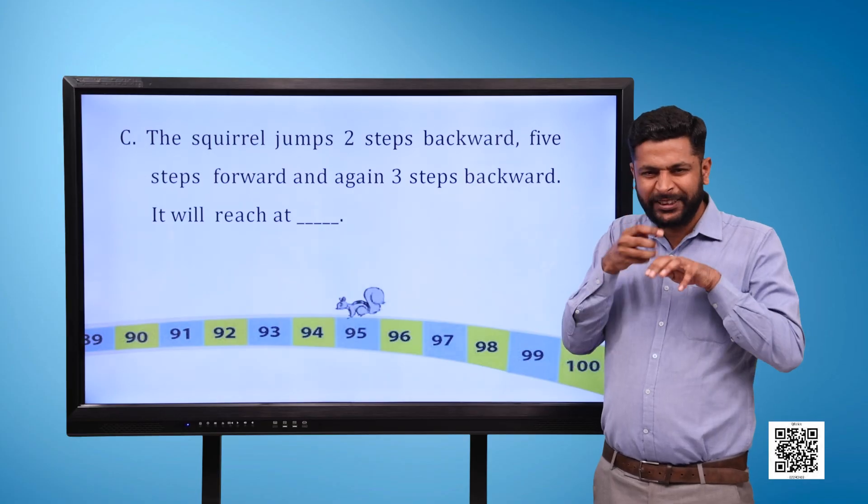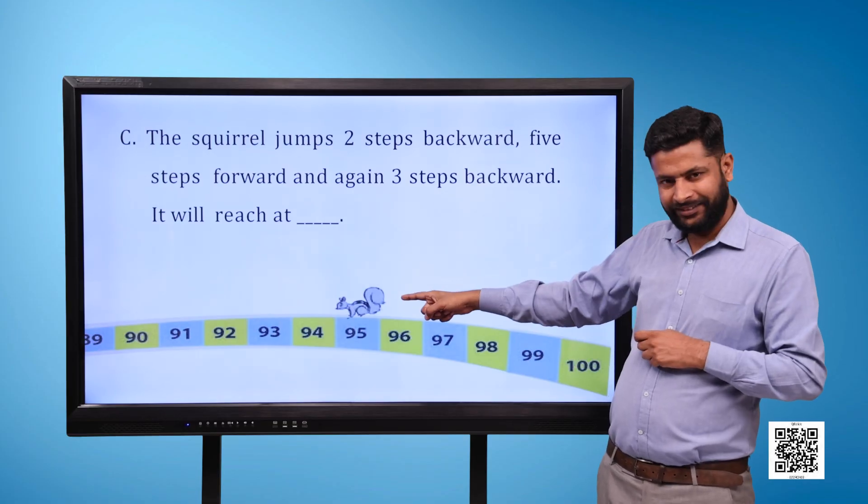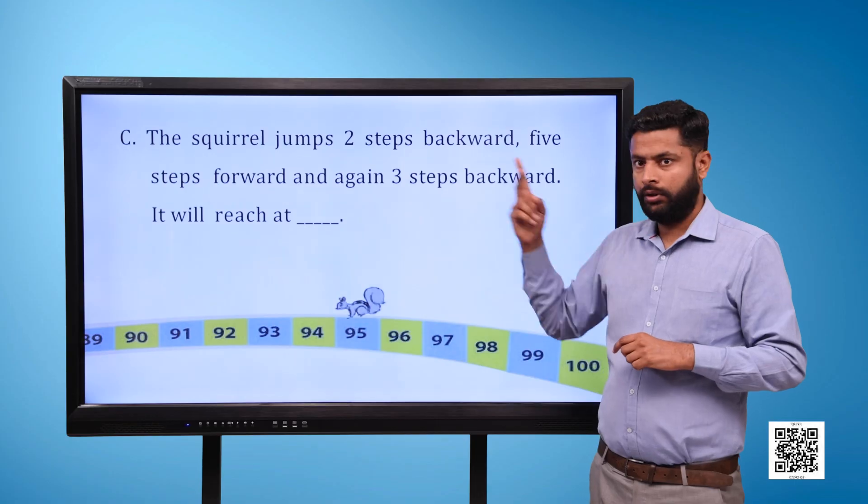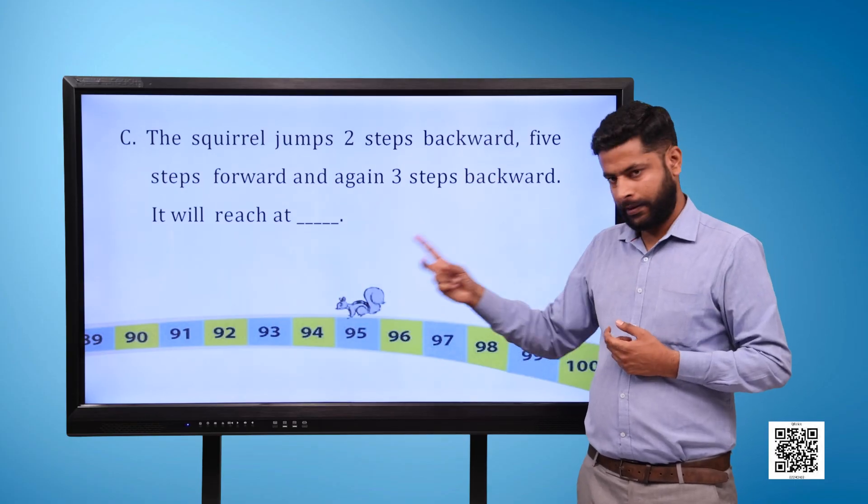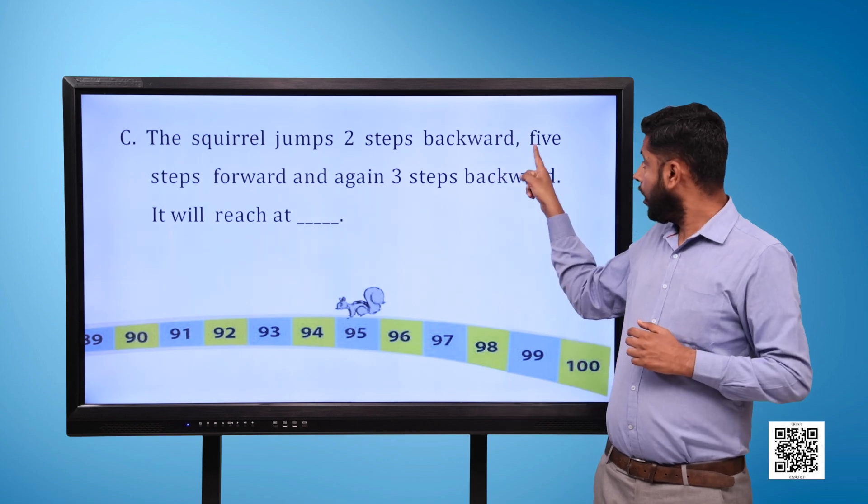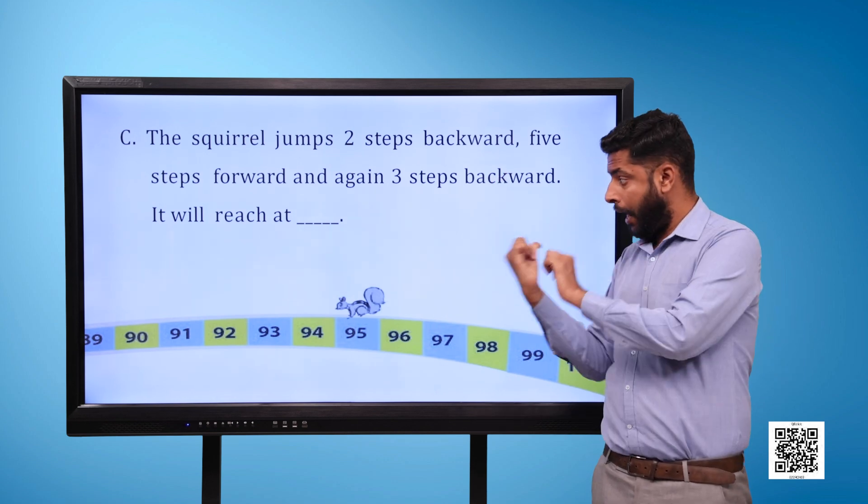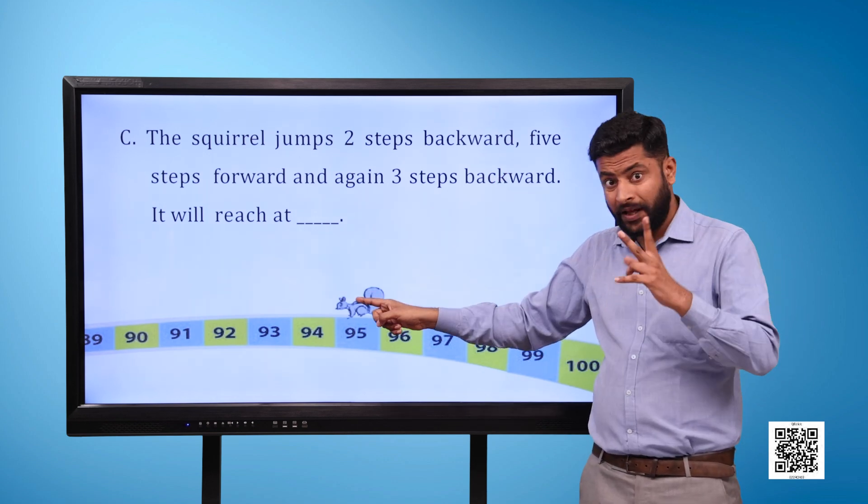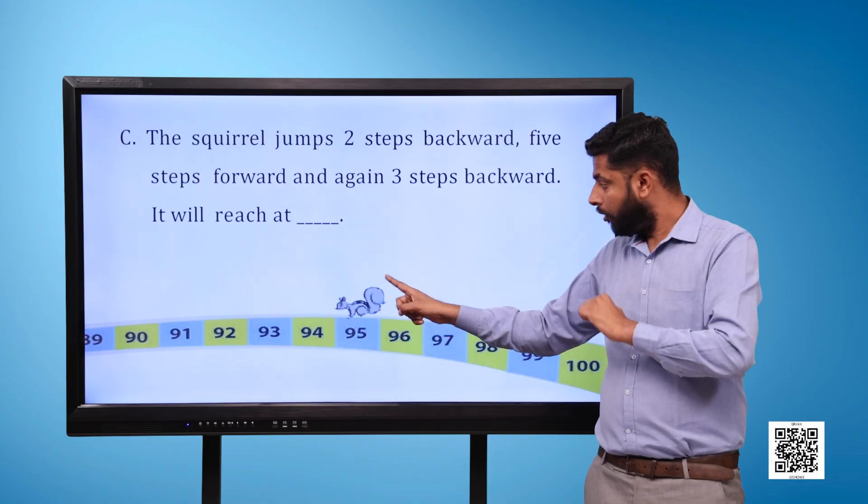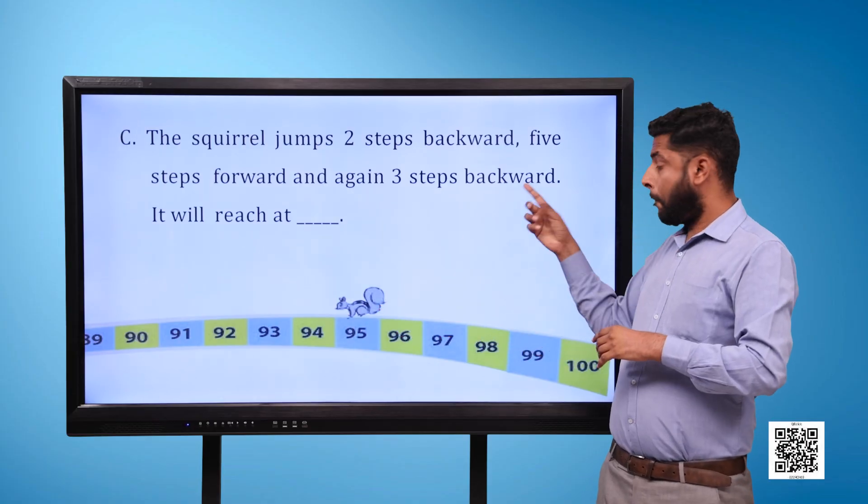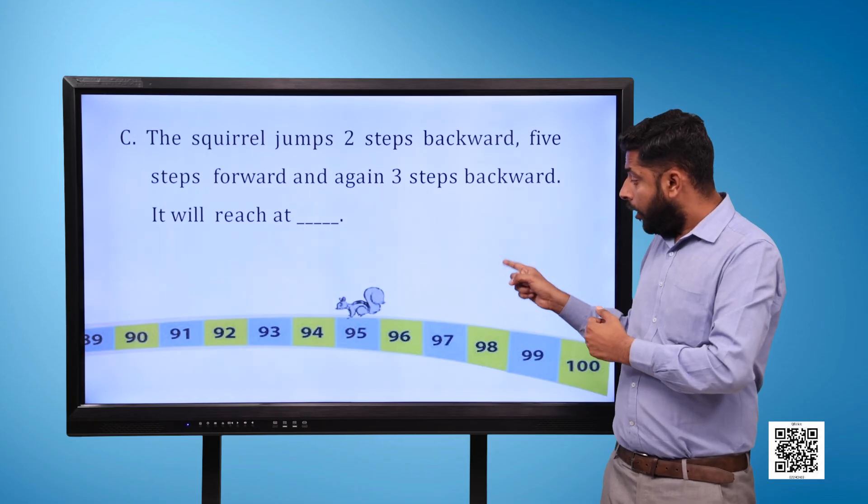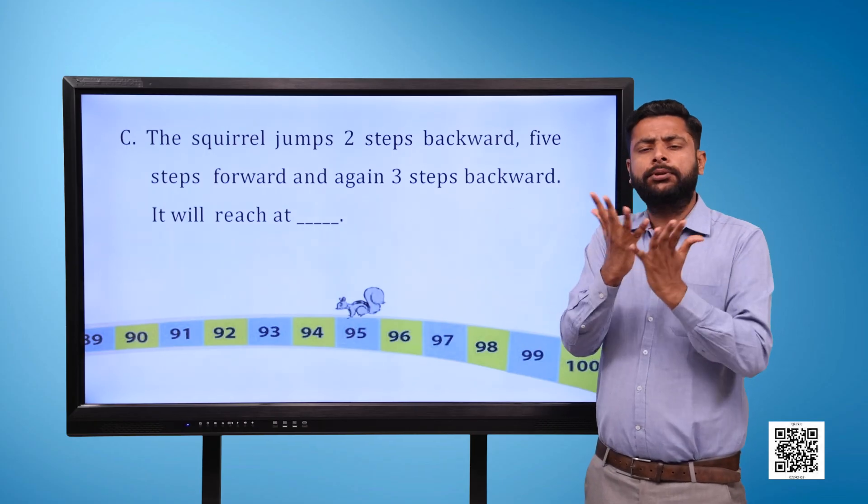The squirrel jumps two steps backward, five steps forward, and again three steps backward. It will reach at blank.